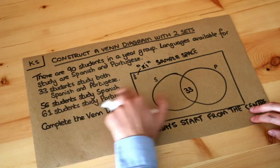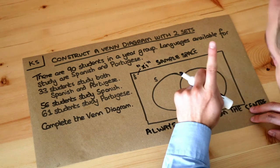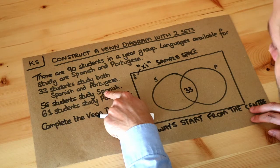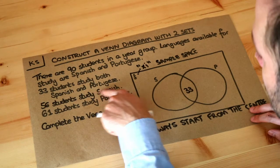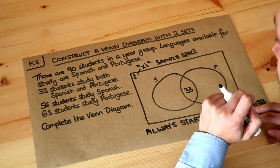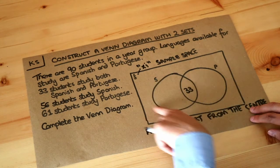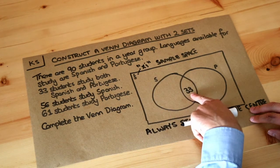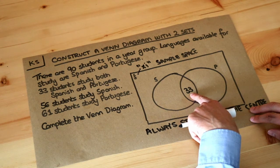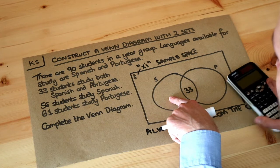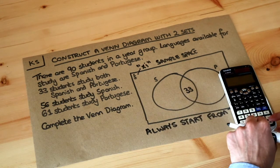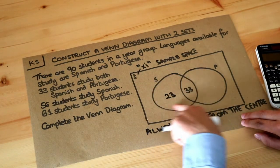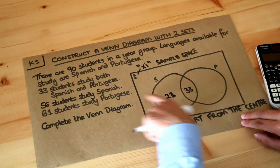We're told 56 students study Spanish — that's the total number who study Spanish, not just those who study only Spanish, since some of those 56 may also study Portuguese. The whole Spanish circle totals 56. Since part of that circle is already 33, the Spanish-only region is 56 minus 33, which equals 23. The numbers in the Spanish circle now add up to 56.